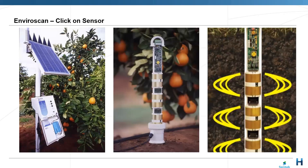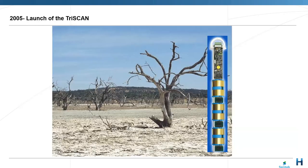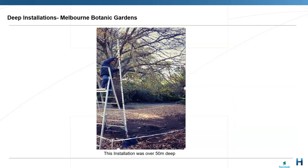Now the products. The first is the EnviroScan — a capacitance sensor still widely used, measuring every 10 centimetres into the soil, particularly good for deep crops. Data can be sent by telemetry or manually downloaded. The TriScan uses multiple frequencies to also get an indication of salinity in the soil at every depth. These probes can go very deep — there is a 50-metre probe installed in the botanical gardens in Melbourne — enabling hydrological studies through the vadose zone.